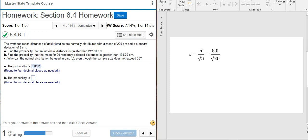So I just plug in the values that are given to me in the problem statement. I have a standard deviation of 8 and a sample size of 20. So 8 divided by the square root of 20 gives me 1.7889 rounded to 4 decimal places.